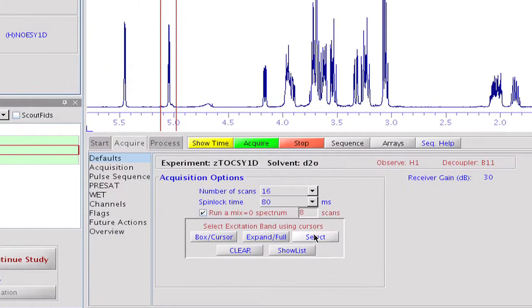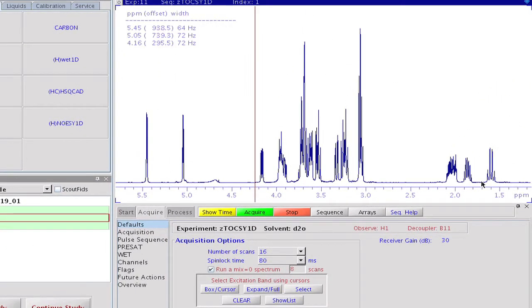We may then select the other anomeric proton, then the multiplet at 4.2 ppm, and the last quartet signal at 1.6 ppm. If we had more targets we could continue until all requested signals are selected.